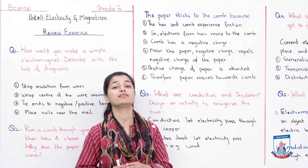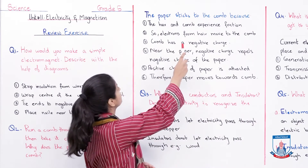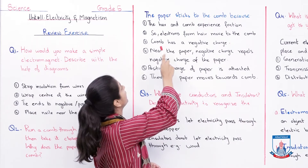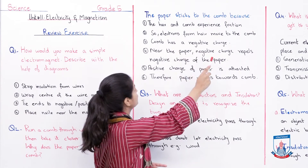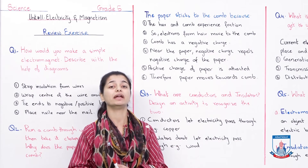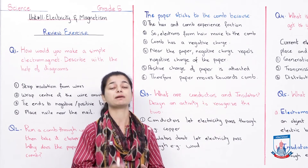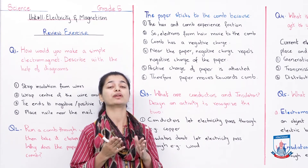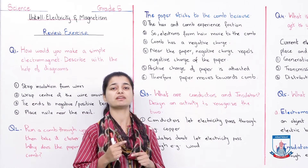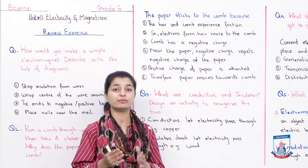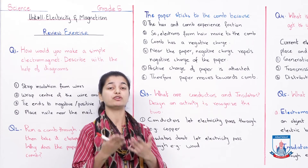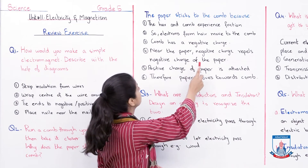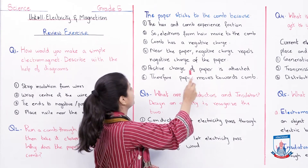We are seeing why the paper is attracted to the comb. The paper sticks to the comb because the hair and comb experience friction — electrons from the hair move to the comb, giving the comb a negative charge. When you brushed your hair with the comb, some electrons transferred from your hair to the comb. Because of the friction between hair and comb, electrons left in the comb, making it negatively charged. When you gain electrons, you become negatively charged.